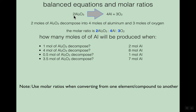I like to think of these numbers like a recipe. For every two aluminum oxides I put into this reaction, I get four aluminums and three oxygen compounds. It's like baking bread — you need four cups of flour, two eggs, and a tablespoon of yeast. It's an ingredients list.